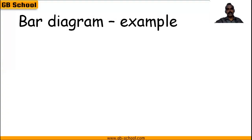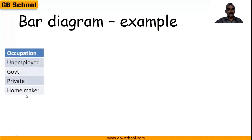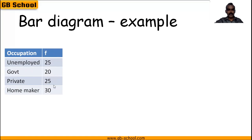Now we'll go with an example of a bar diagram. As usual, to prepare a bar diagram we need a frequency table. Here we have data related to occupation — unemployed, government, private, and homemaker. These are the frequencies: 25 people are unemployed, 20 have government jobs, 25 are in private jobs, and 30 are homemakers.